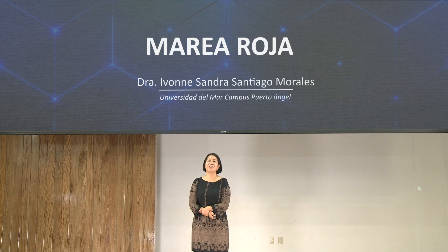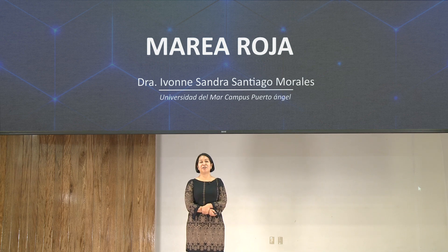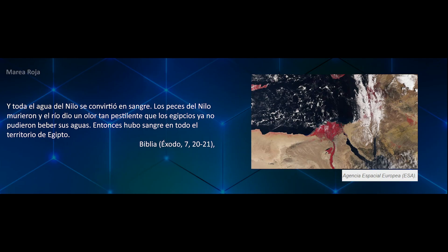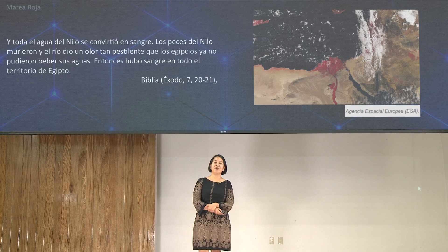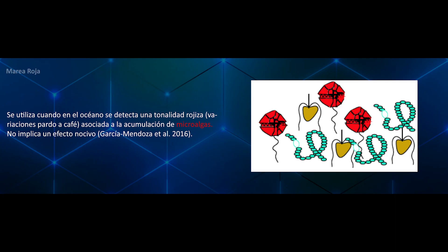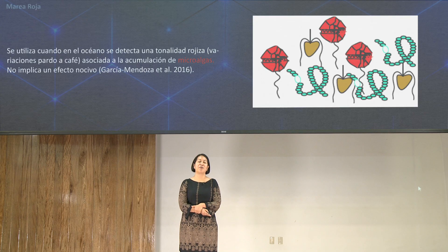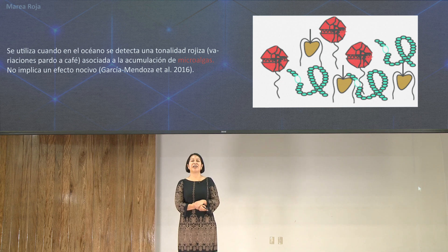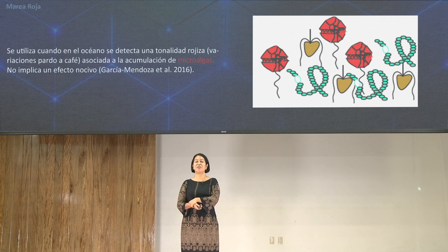Today we will talk about 'marea roja' (red tide), a term known since antiquity with its first citation in the Bible, where the waters of the Nile turned blood red, accompanied by fish mortality and the impossibility of drinking its waters. Today, this term is used when there is a color change in the ocean to a red or brown color associated with the presence of certain microalgae. However, not everything that produces red coloration has a harmful effect, nor is everything harmful necessarily red-colored.